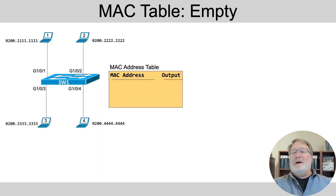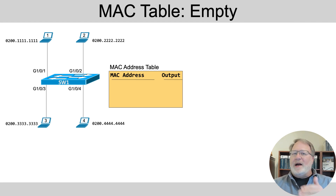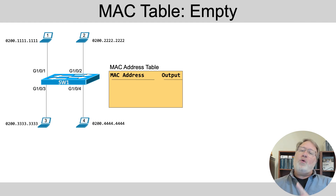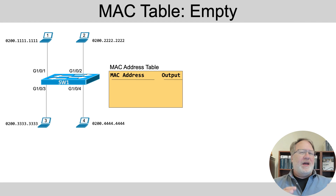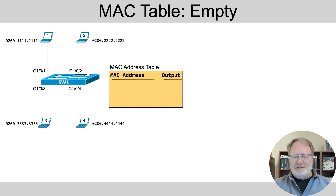Now let's talk about the learning process. The beginning point is that the switch doesn't know anything to put in its MAC table — it's dynamically built, so there's an empty table. The table lists the MAC address and the output interface or output port that the switch would use when forwarding to that address. A VLAN ID will also be listed there, but we'll expand on the MAC table concept when we talk about VLANs.